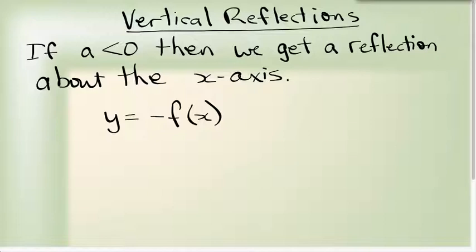Or I can combine it with an a value, minus 2 f(x). In this case, a equals minus 2. So what it means is it's been reflected on the x axis. It's twice the size, because I have a vertical stretch as well. So you can combine a reflection and a stretch.